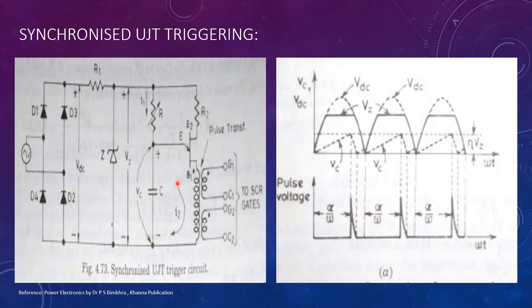As current I2 is in the form of a pulse, windings of the pulse transformer have pulse voltages at their secondary terminals.